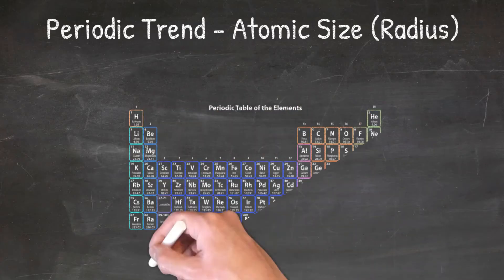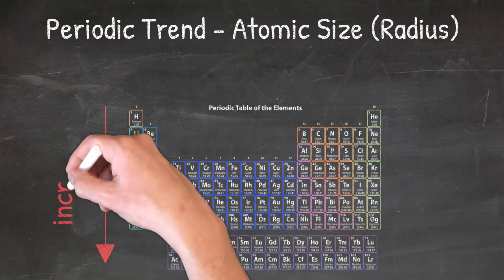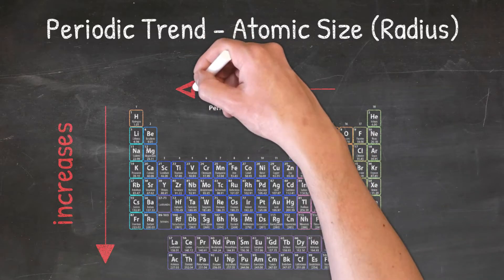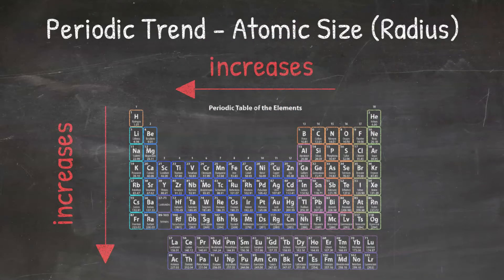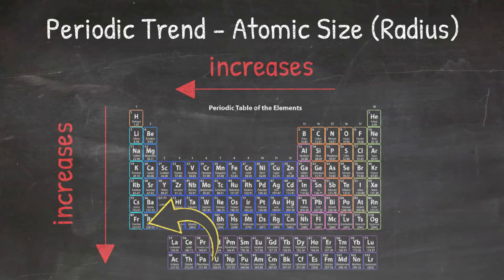The periodic trend for atomic size is that the size of the atom gets bigger as you go down the periodic table and from right to left across the periodic table. One way to remember this trend is to remember that francium, which is Fr, is the largest element on the periodic table and is at the bottom left side of the periodic table. This can help you remember that atomic size gets bigger going down and to the left.